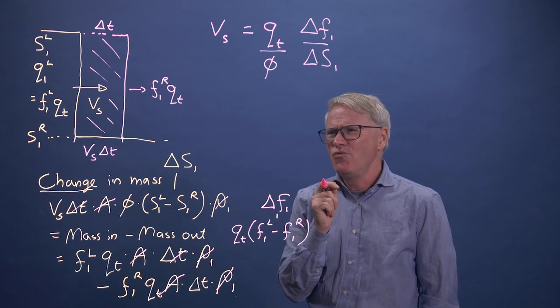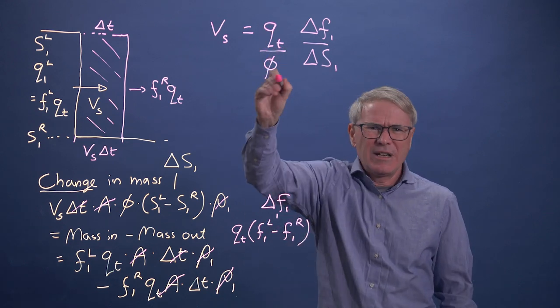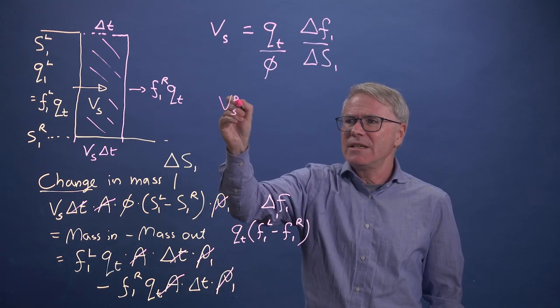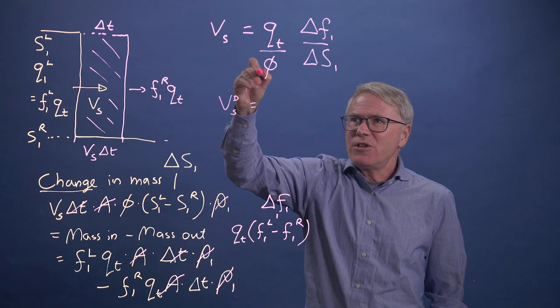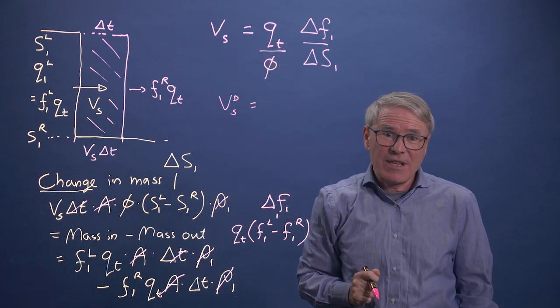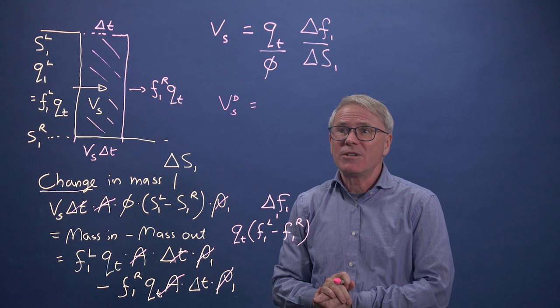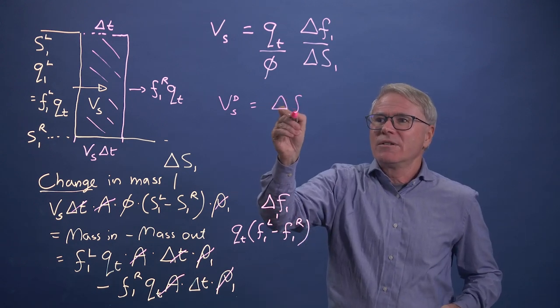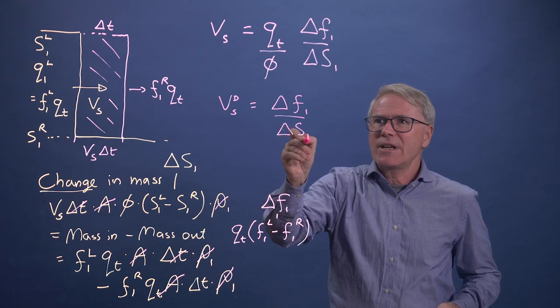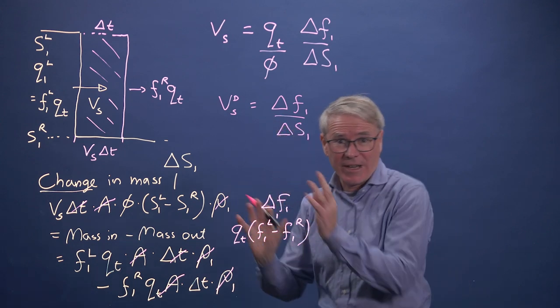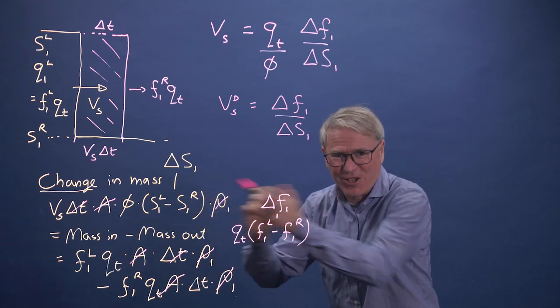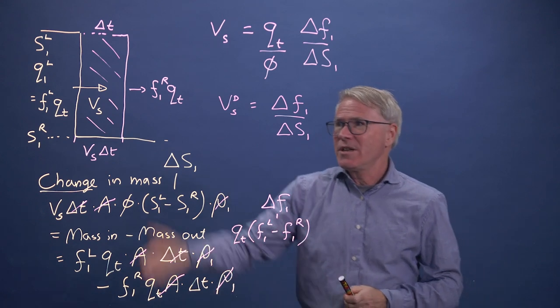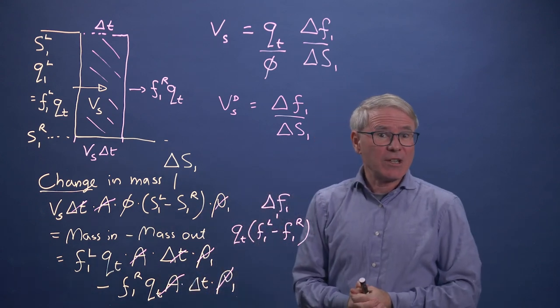You might be wondering, well, this is a real speed. This has got dimensions of meters per second. And what's my dimensionless shock speed? The dimensional form. And if you can't see this immediately, sort of go through the maths with the dimensionless numbers. But actually, the dimensionless form should be obvious. It's just delta F over delta S. The QT over phi is in the conversion to dimensionless units. So we have a shock that moves at a speed which is the change in F divided by the change in S.